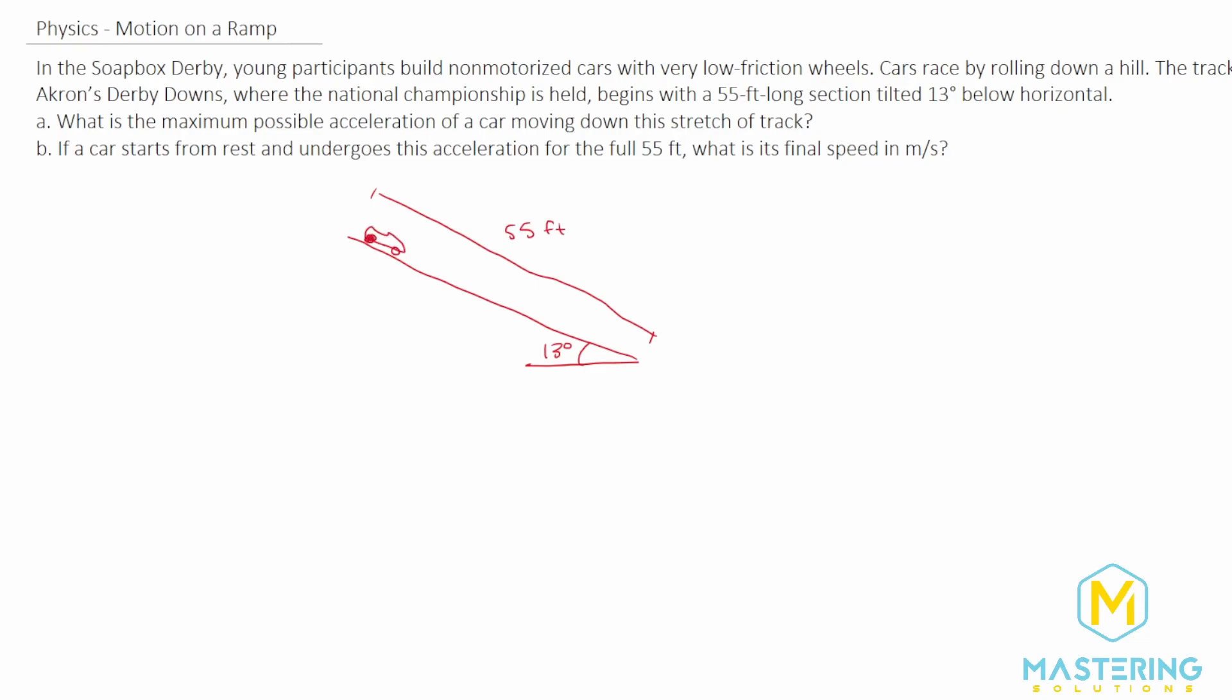and then we have these little derby cars. Alright, so here's our little derby car, it's rolling down the hill, and for part A we need to figure out what the maximum possible acceleration is of a car moving down the stretch of track.